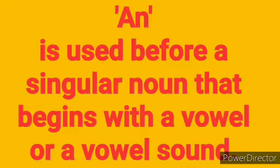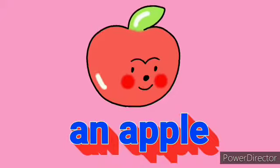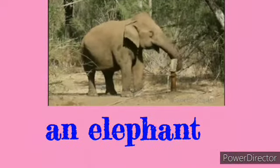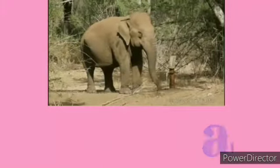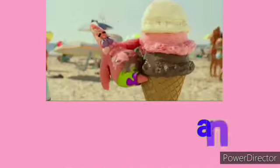Five vowels, and the vowels are used with 'an'. Examples: an elephant, an umbrella, an ice cream.